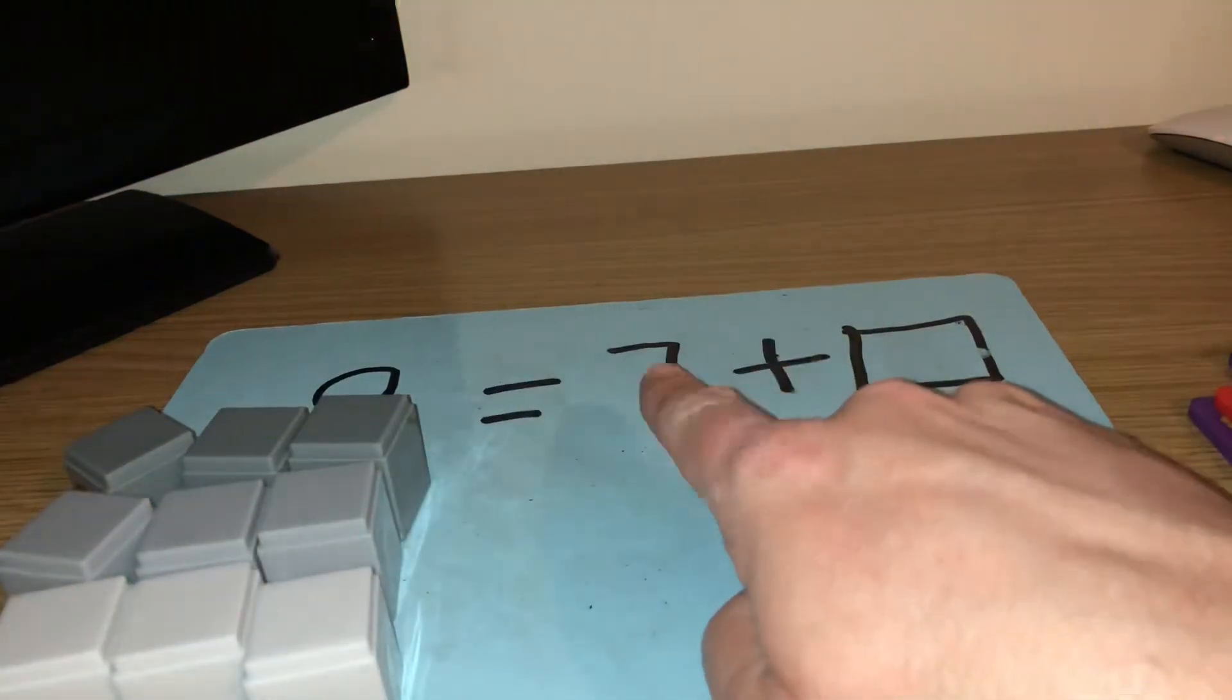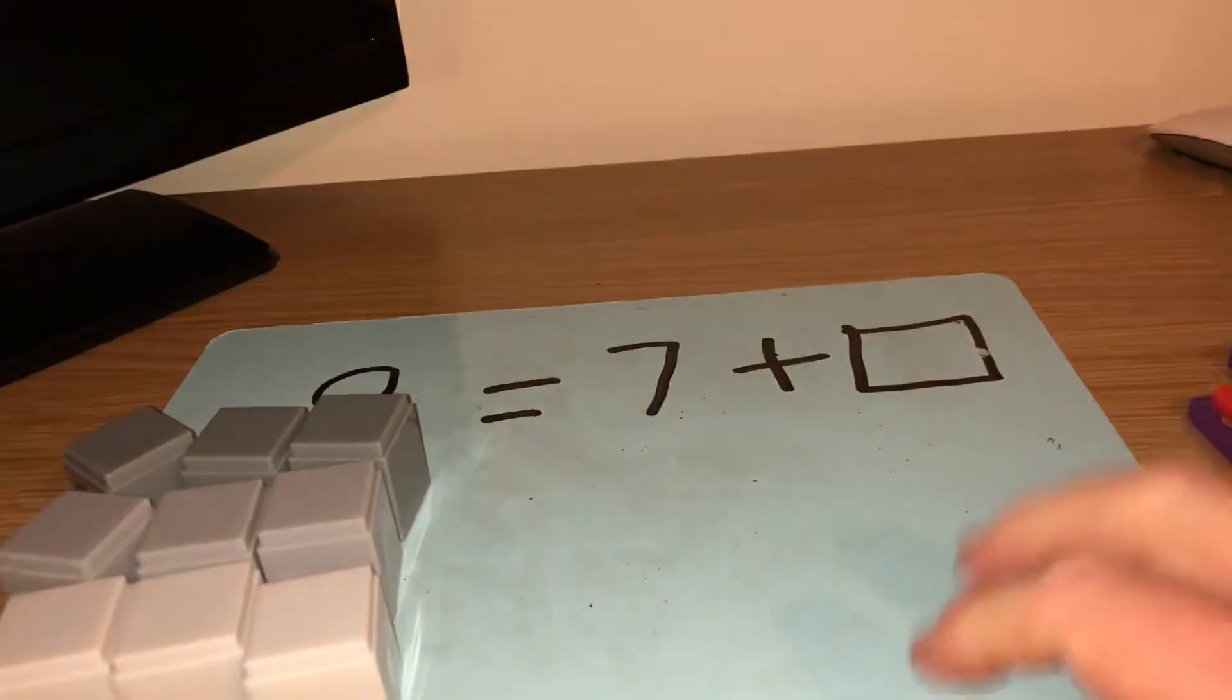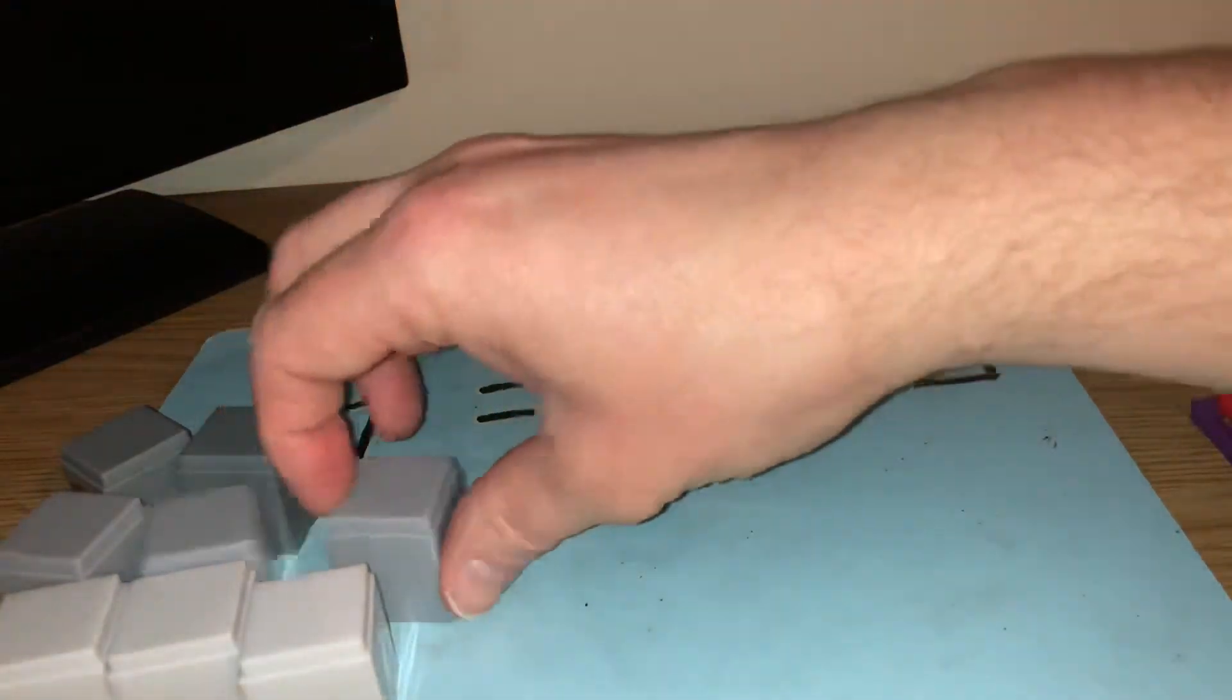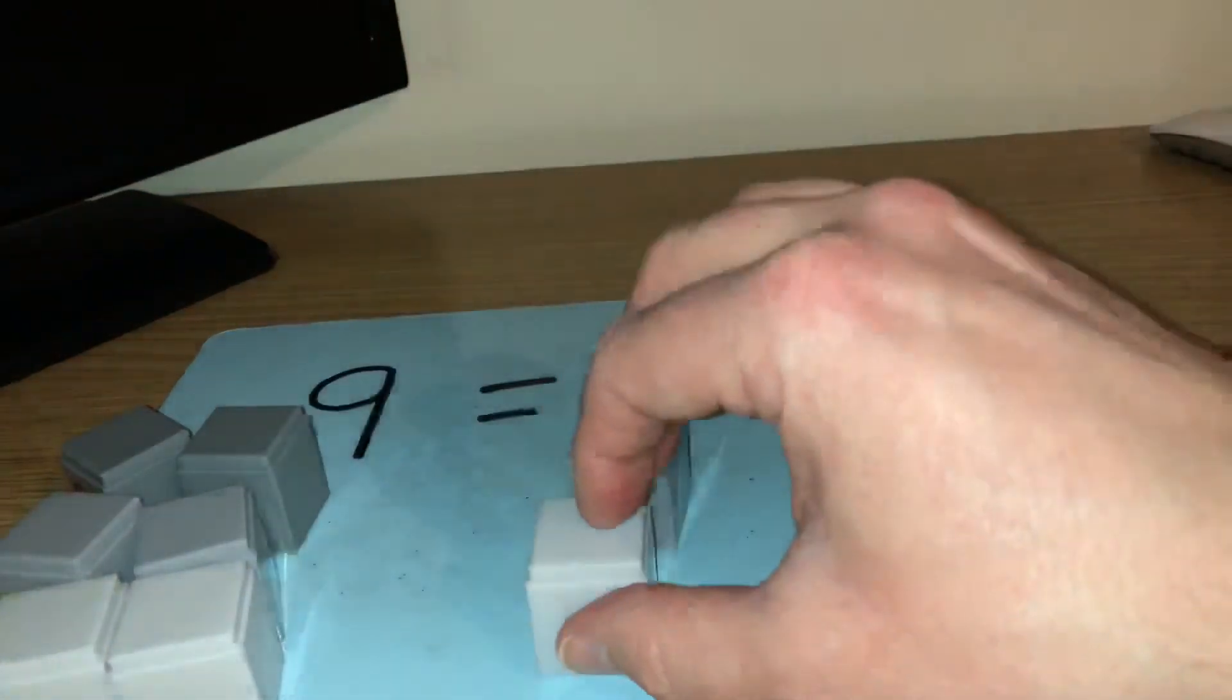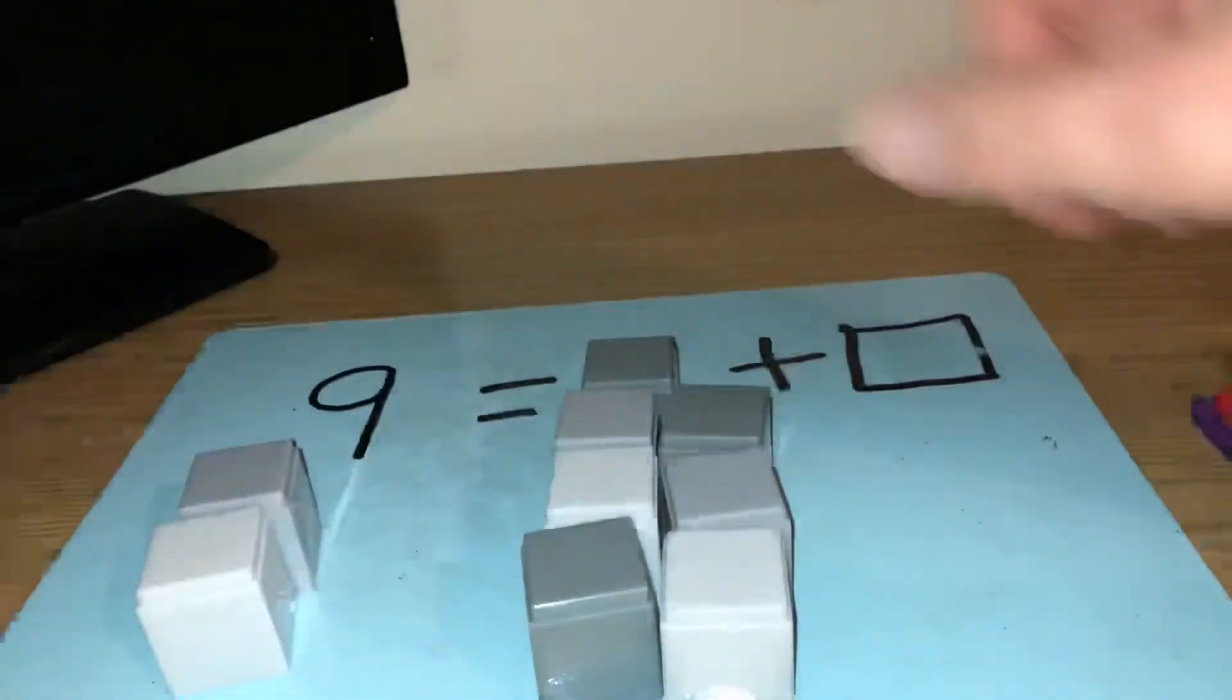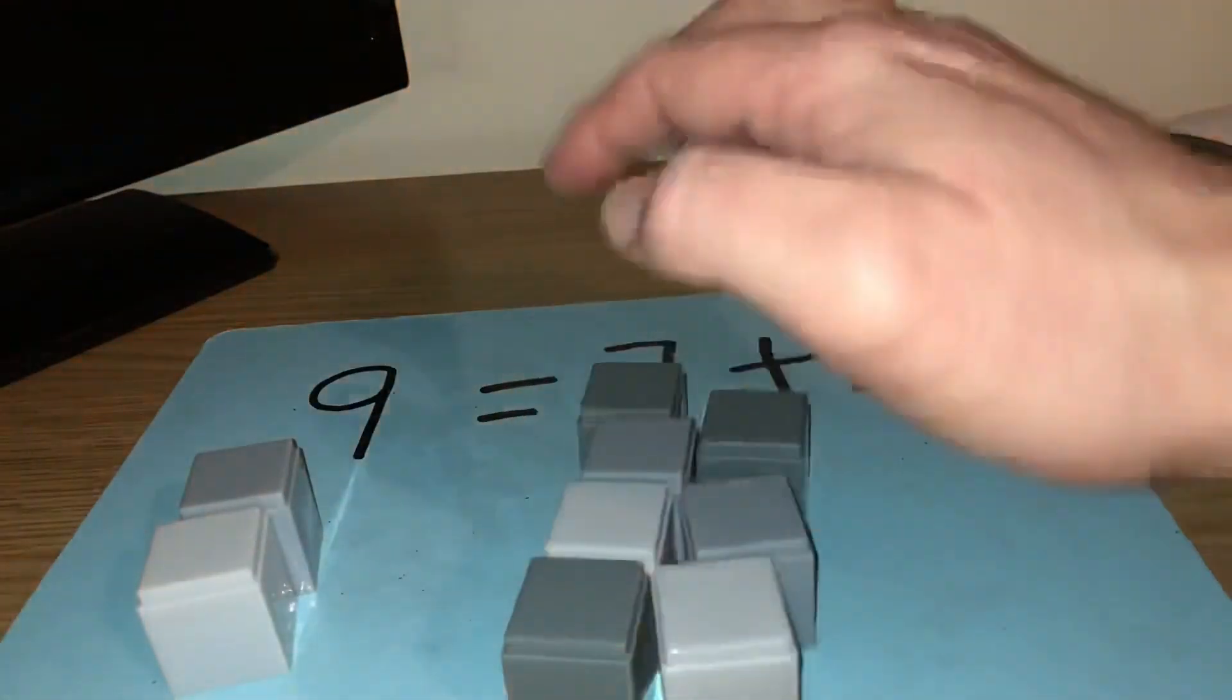Now I know that 7 is part of it so I'm going to take the 7 from here. So I'm going to go 1, 2, 3, 4, 5, 6, 7. So what's the missing part going to be? 7 and what makes 9?